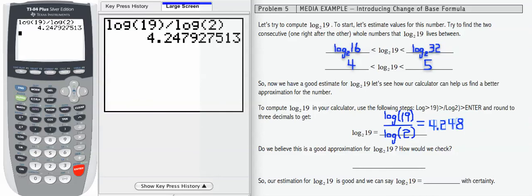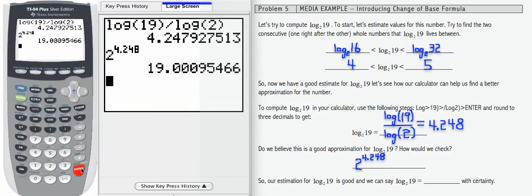To do that, what we're going to end up computing is 2 raised to the 4.248 power, and that better equal 19. So let's go on our calculator and do 2 exponent 4.248, enter, and that is approximately 19 if we round a little bit.